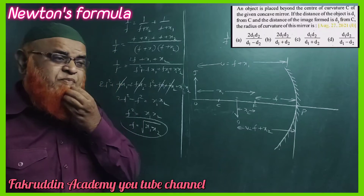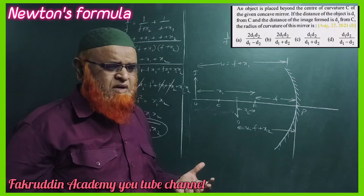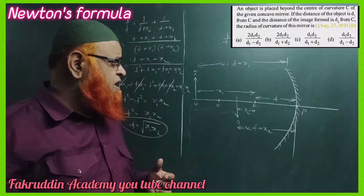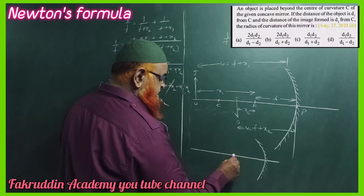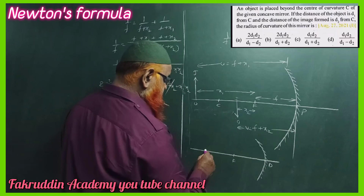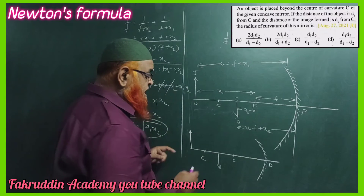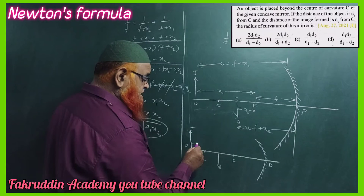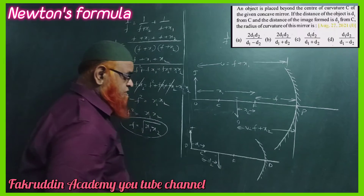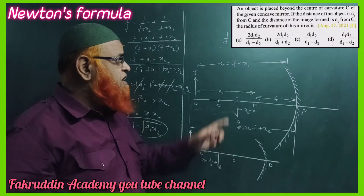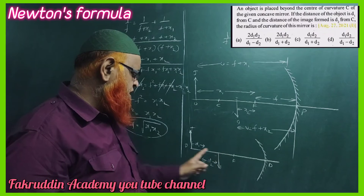Now how are we going to solve the given problem using Newton's formula? There is a slightly different concept in that problem, but the basic formula is the same. Drawing a separate diagram: this is the focal point, this is the pole of the mirror, this is the center of curvature, this is the object, and this is the image. In the problem, the object is at a distance d1 from the center of curvature, and the image is at a distance d2 from the center of curvature. Our aim is to find x1, the distance from the focal point to the object.